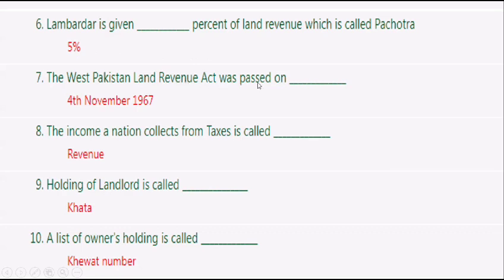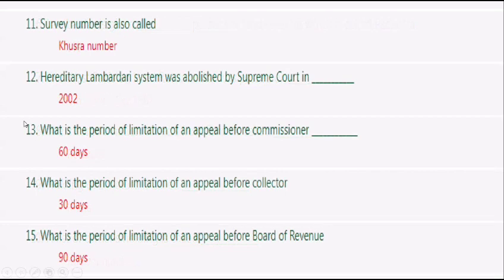Lumbardar is given 5 percent of land revenue, which is called Pachotra. The West Pakistan Land Revenue Act was passed on 4th November 1967. The income a nation collects from taxes is called revenue. The holding of a landlord is called Kata. A list of owners/survey number is called Khasra number. The hereditary lumbardary system was abolished by the Supreme Court in 2002.